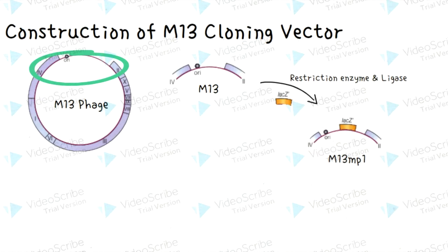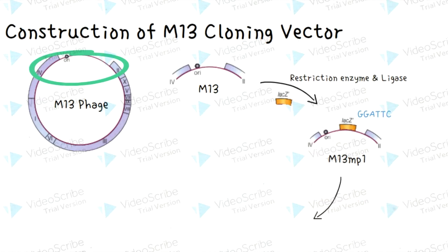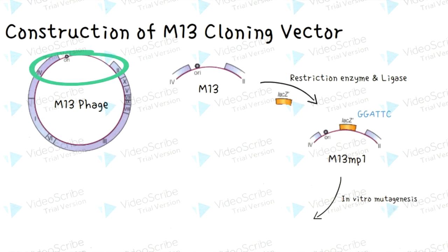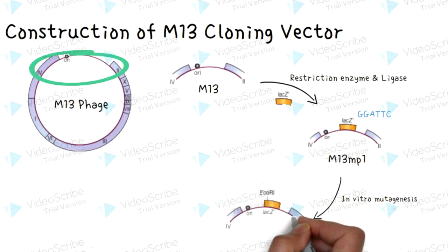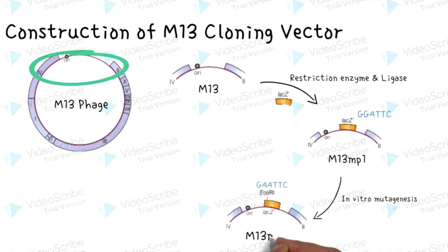It does have a site, but it is G-G-A-T-T-C, slightly different from the EcoRI restriction site. So the second step is to alter it with in vitro mutagenesis. The hexanucleotide sequence becomes G-A-A-T-T-C, which is an EcoRI site. We call this product M13 MP2.